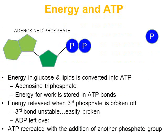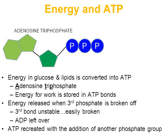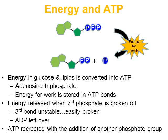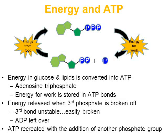Now that the third phosphate has been broken off, ATP can actually be recreated. You have adenosine diphosphate (ADP) on one side and the broken phosphate on the other. With the addition of energy from the food we eat and various enzymes, that broken phosphate can be reattached to recreate ATP, giving our cells more ATP from more energy. This is called the ADP-ATP cycle, and this process continues over and over from birth until death.